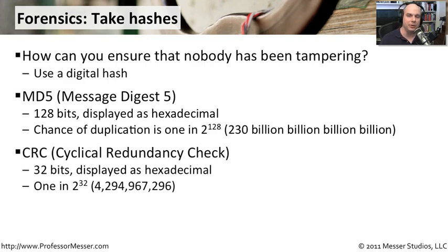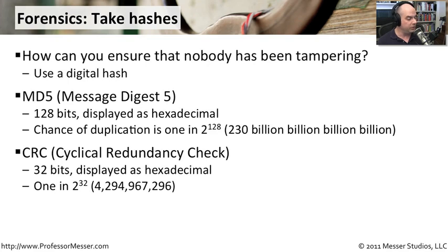Another type of hash is a CRC, or cyclical redundancy check. This is a much smaller type of check — it's only 32 bits long, displayed as hexadecimal. The chances of having a CRC duplicated after a change are one in two to the 32nd power, which is just over four billion to one. You'll notice that in your hardware — maybe hard drive checks and memory checks — they use CRCs. It's a really good way to use that technology because it can be calculated relatively fast, and it's something you can verify very quickly.